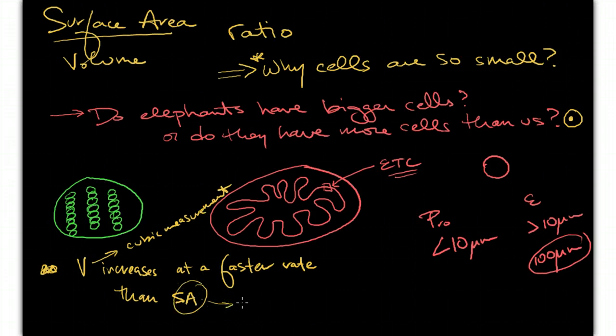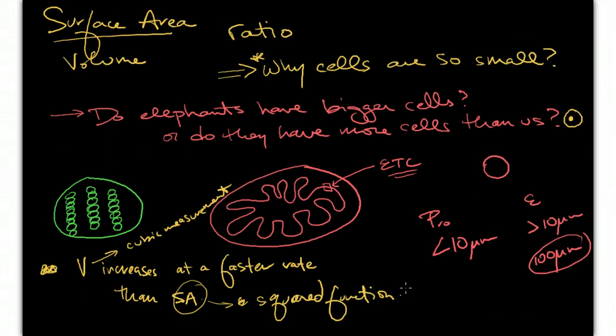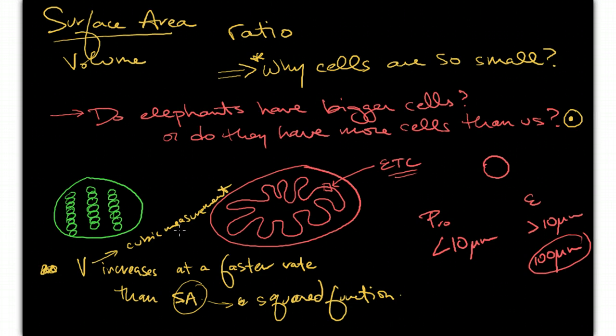Whereas surface area is really, if we're talking about a cube it's got six sides, but most cells are not cubes. But it's really just a squared function. It's length times width, whereas volume is length times width times height. So as a cell gets bigger, its volume increases at a faster rate than the surface area. So cells will have to remain small for that reason.